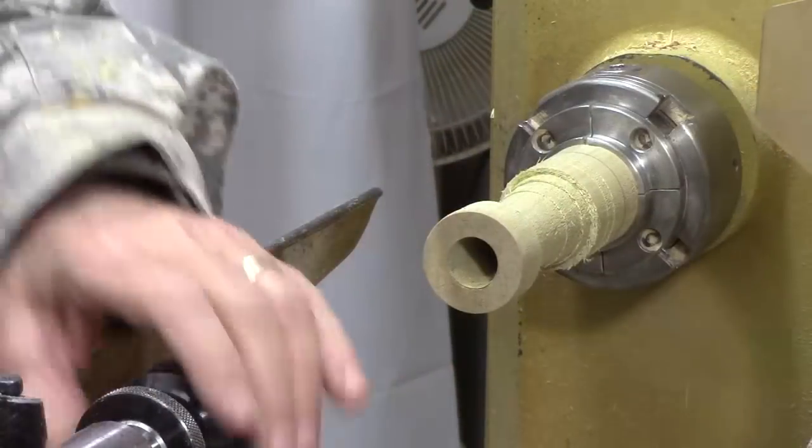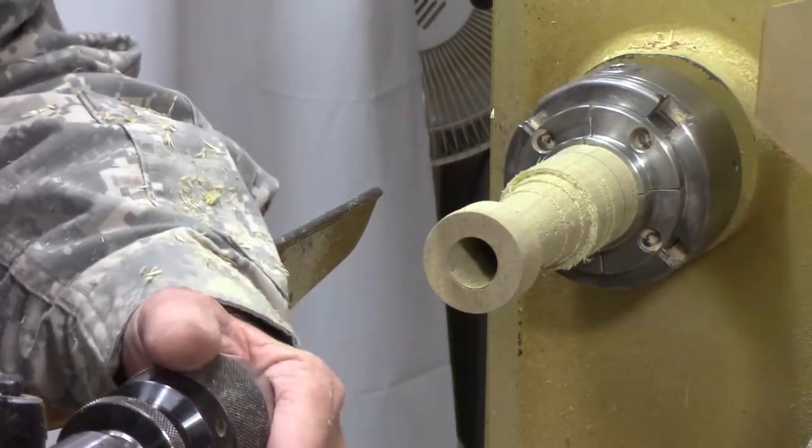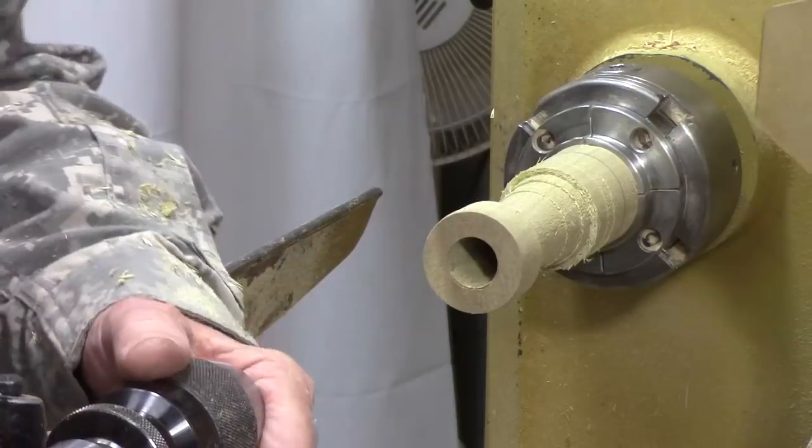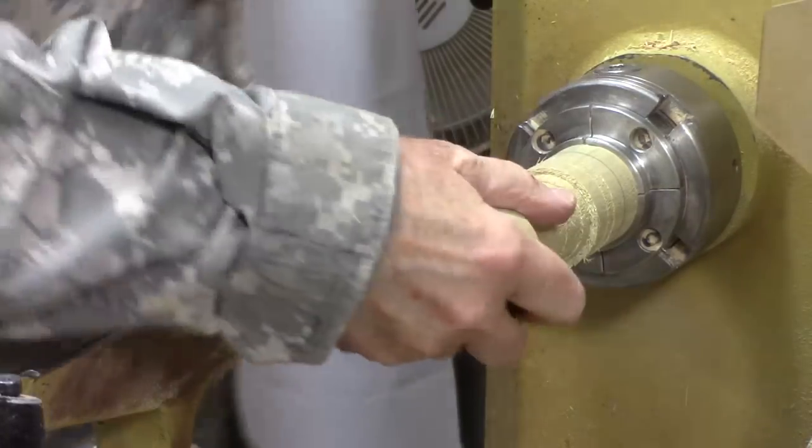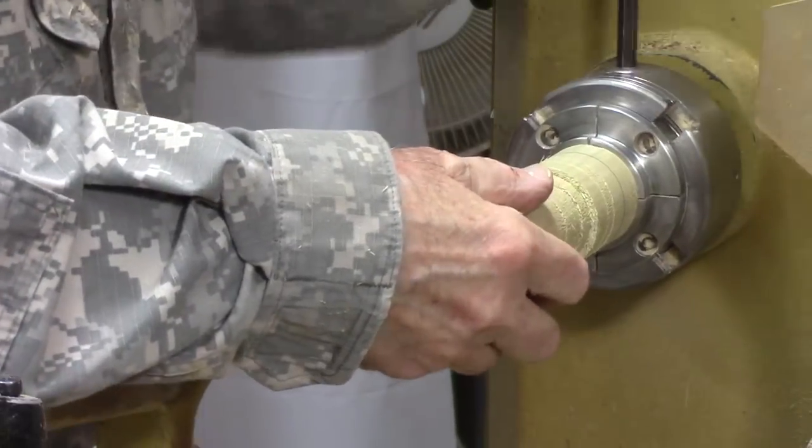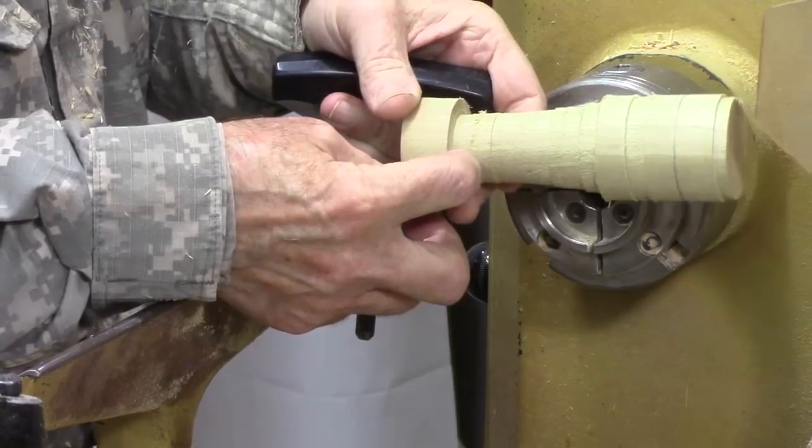All right now that I got it drilled out I'm going to go ahead and remove the Jacob's chuck and put this back between centers. I've got a hole here so I'll use the 60 degree cone as a live center and that'll work just great. So let's take that out of chuck because all this needs to be taken down to this size right here.